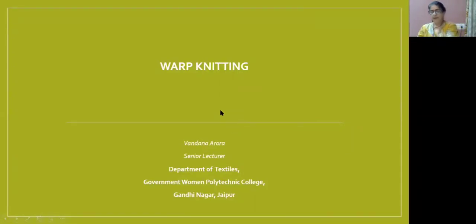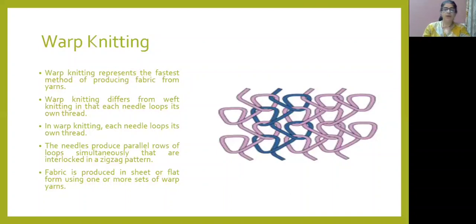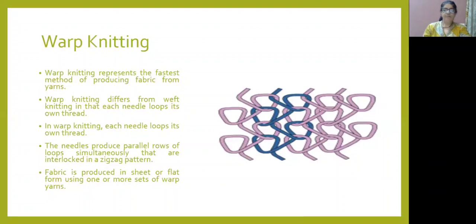I have been teaching many lectures on knitting. Warp knitting is the fastest method of fabric production, which is made with many yarns. Warp knitting is different from weft knitting. In warp knitting, one needle is made of individual thread, which drives the process of knitting. These needles are parallel to each other.